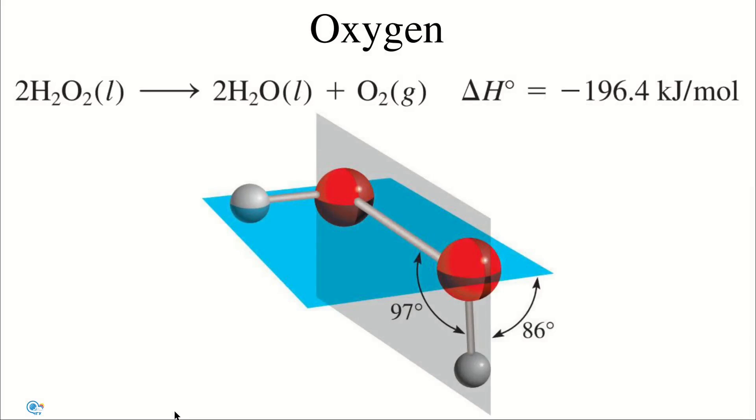Hydrogen peroxide is miscible with water in all proportions due to its ability to hydrogen bond with water. Dilute hydrogen peroxide solutions, 3% by mass, available in drug stores, are used as mild antiseptics. More concentrated hydrogen peroxide solutions are employed as a bleaching agent for textiles, fur, and hair. The high heat of decomposition of hydrogen peroxide also makes it a suitable component in rocket fuel.